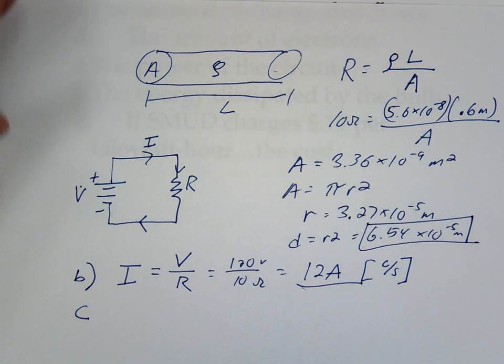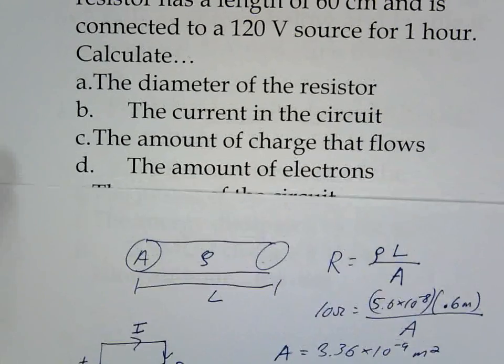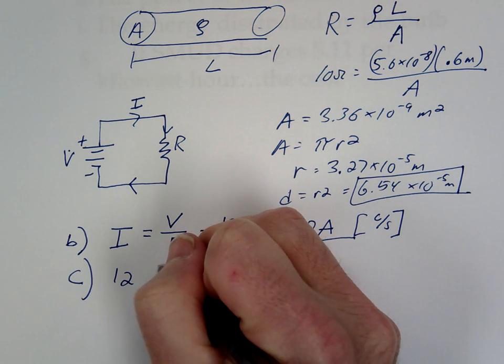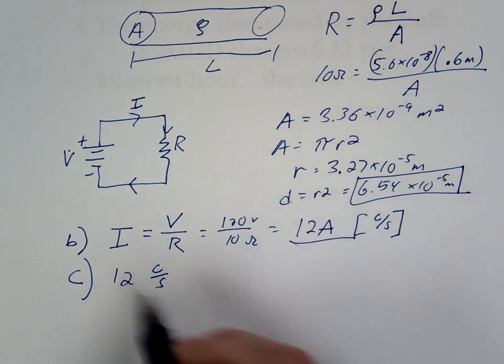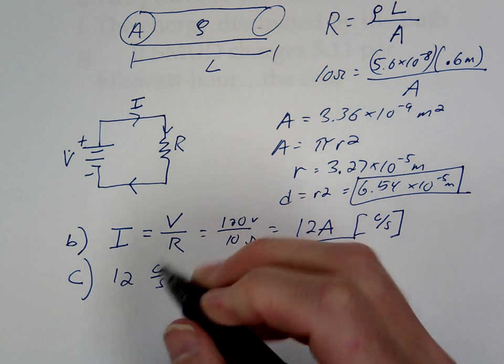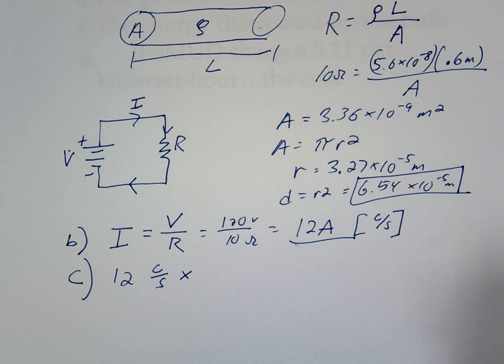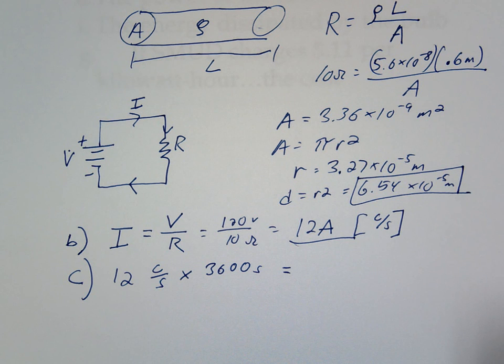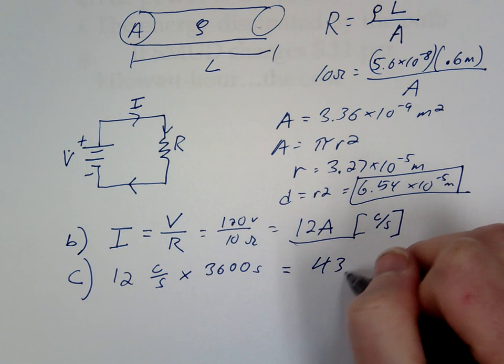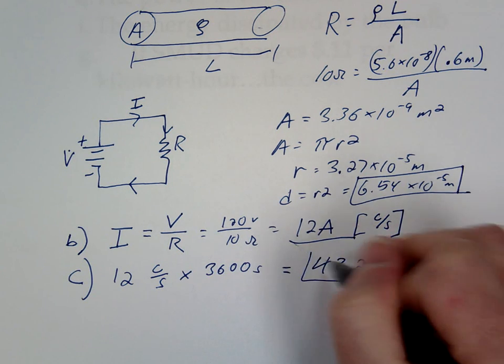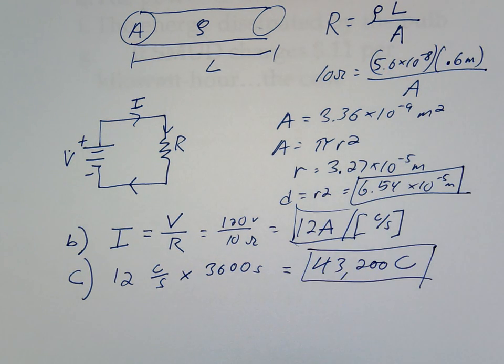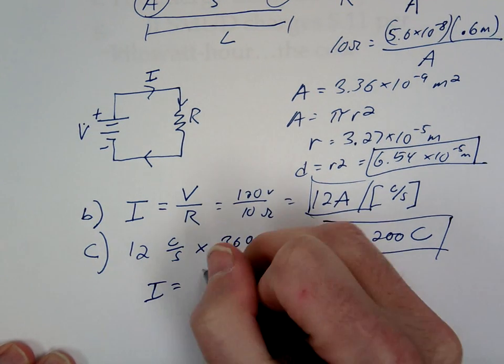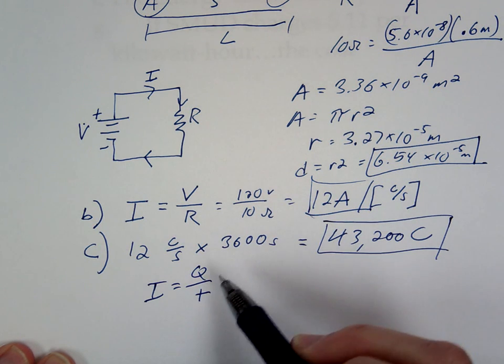Letter C. So letter C is asking us how much charge is flowing. Well, you can see, just if we write it like this, twelve coulombs per second, that means in one second, twelve coulombs are going to flow through. So in one hour, how many seconds in one hour? How many coulombs flow in that amount of time? What is the actual equation for current? Just to summarize, I equals what? Q over T. Coulombs per second.